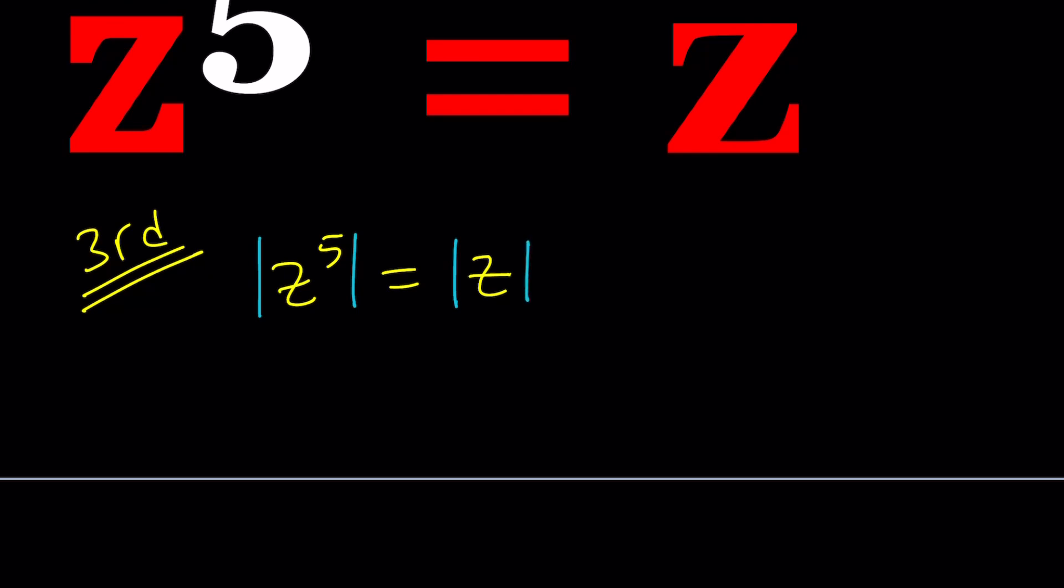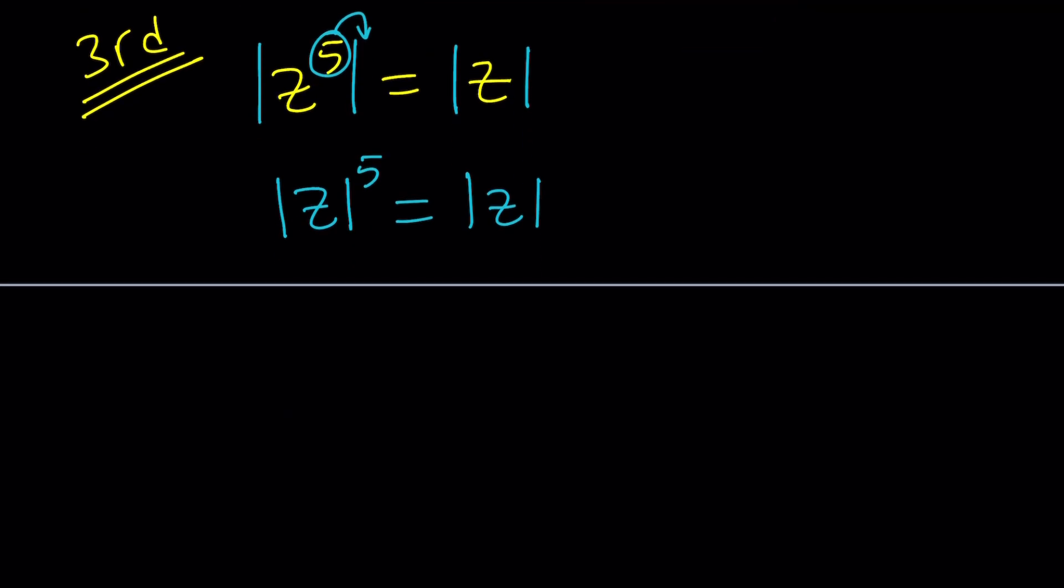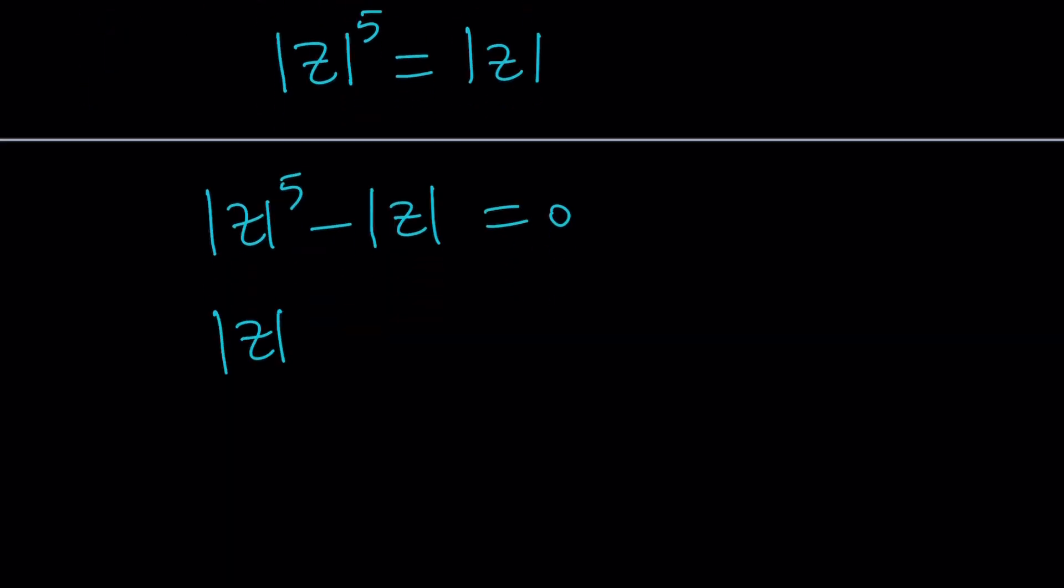Let's absolute value both sides. And absolute values have a really interesting property that you can put the five outside. So now we get the following equation. And then from here, we can basically put both of these on the same side, and then pull out this as a factor, like a common factor. So we're factoring and we get this interesting equation. This is all about absolute value. We haven't gotten to solving z yet, but I do want to get more information about the absolute value because it's going to be super helpful.